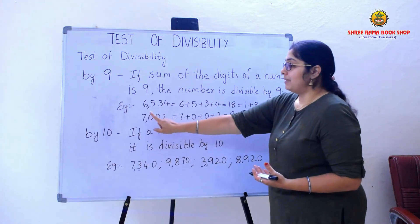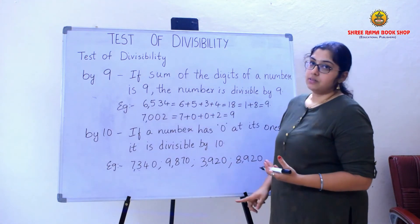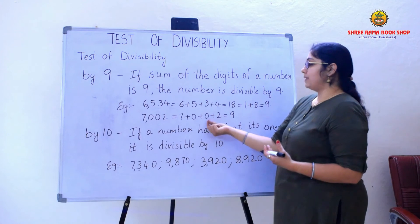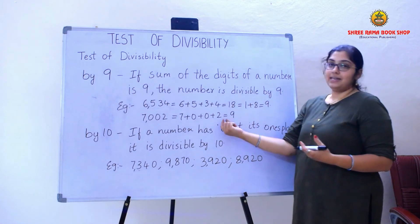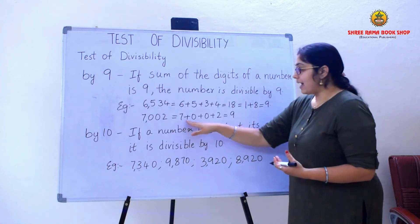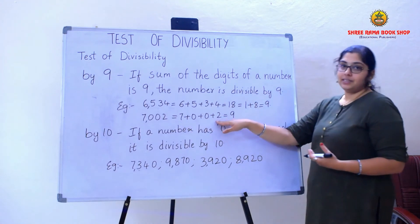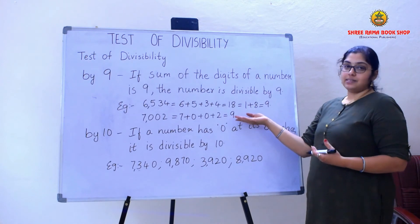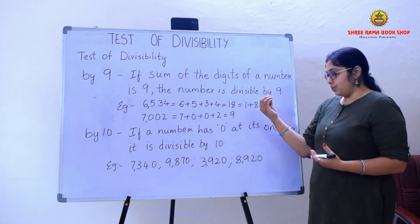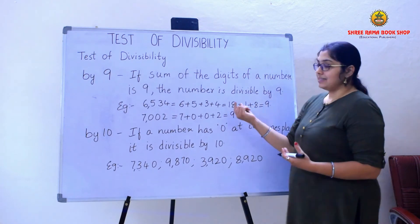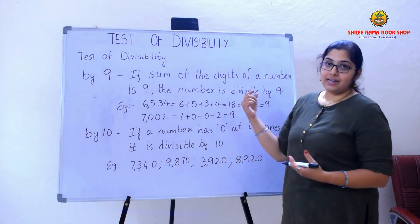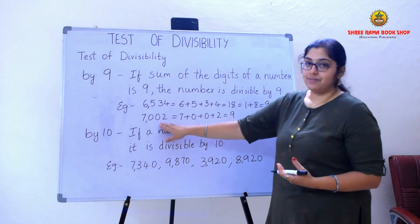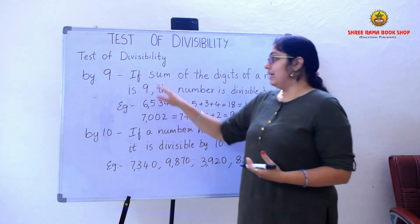The second example is 7002. Adding 7 plus 0 plus 0 plus 2: if I add all the digits of the number, I am getting the sum as 9. So I can say that this number 7002 is divisible by 9.